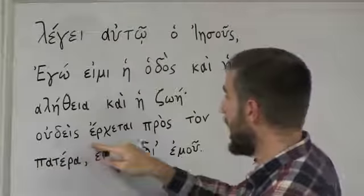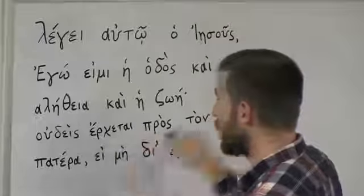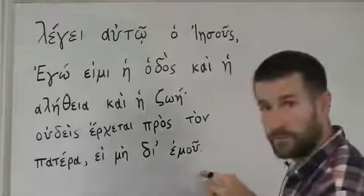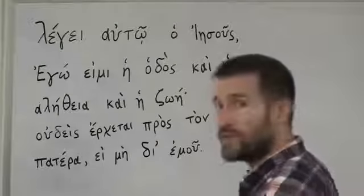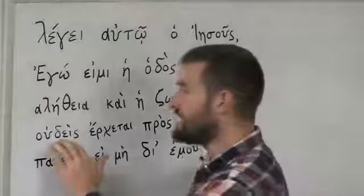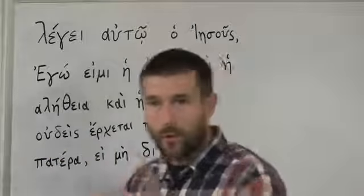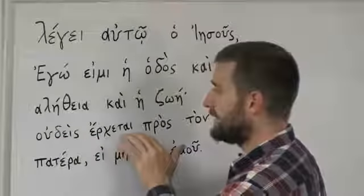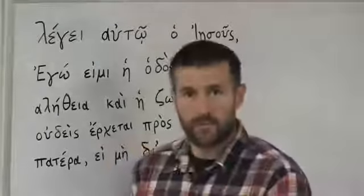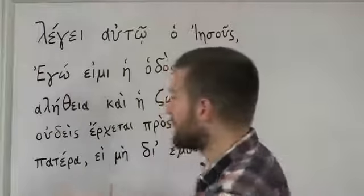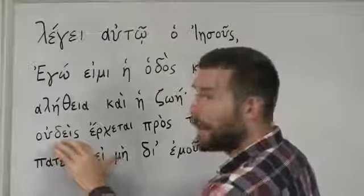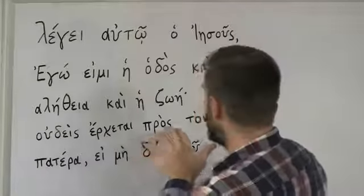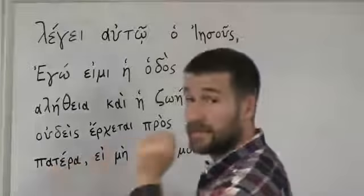Oudeis erchetai pros ton patera ei mē di' emou. Let's go through this word by word. Oudeis means 'no one' or 'nobody.' Erchetai means 'comes' or 'cometh' in the King James. So 'nobody cometh' — oudeis erchetai pros ton patera — unto the Father.